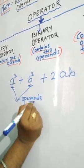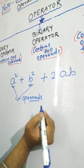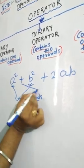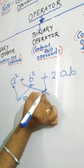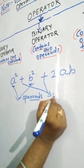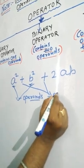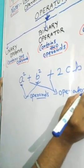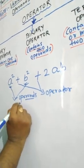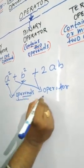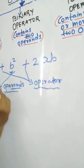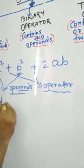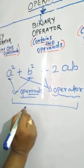So operands are the variables. The plus sign here is called the operator. And the combination of operator and operands together — this whole thing — is called an expression.